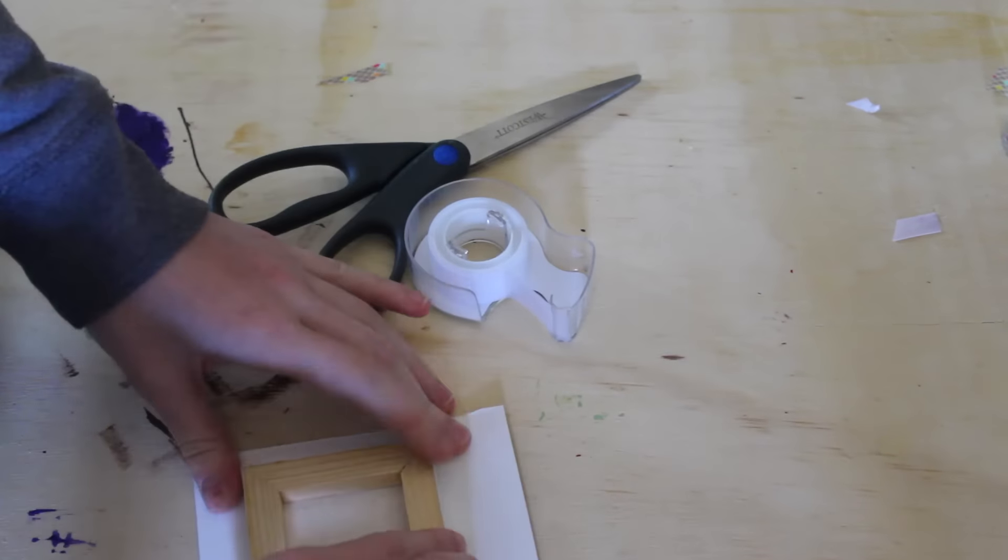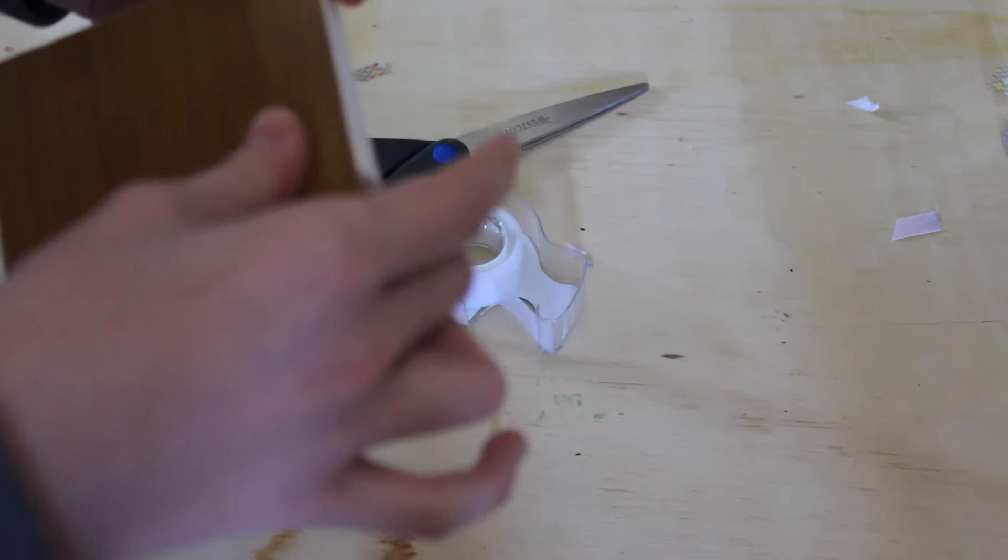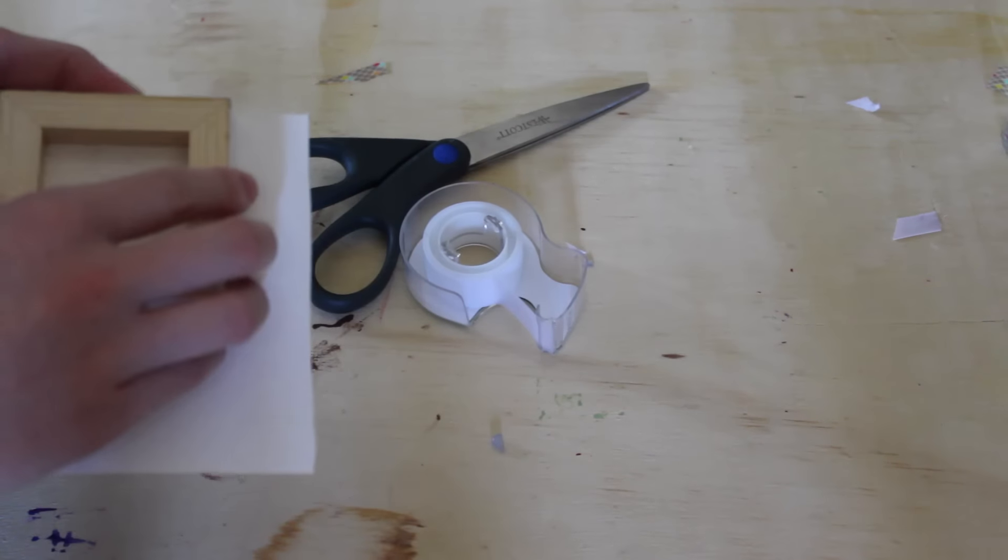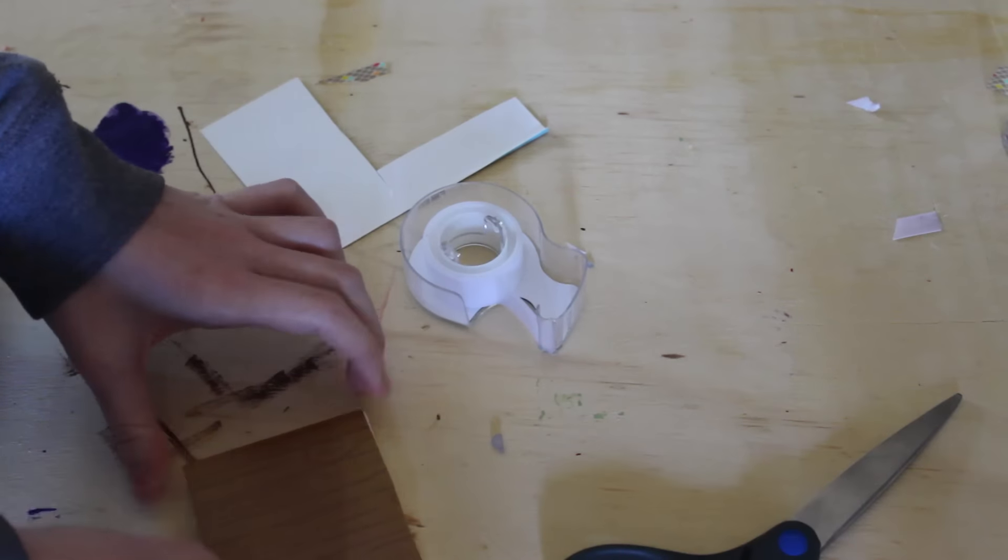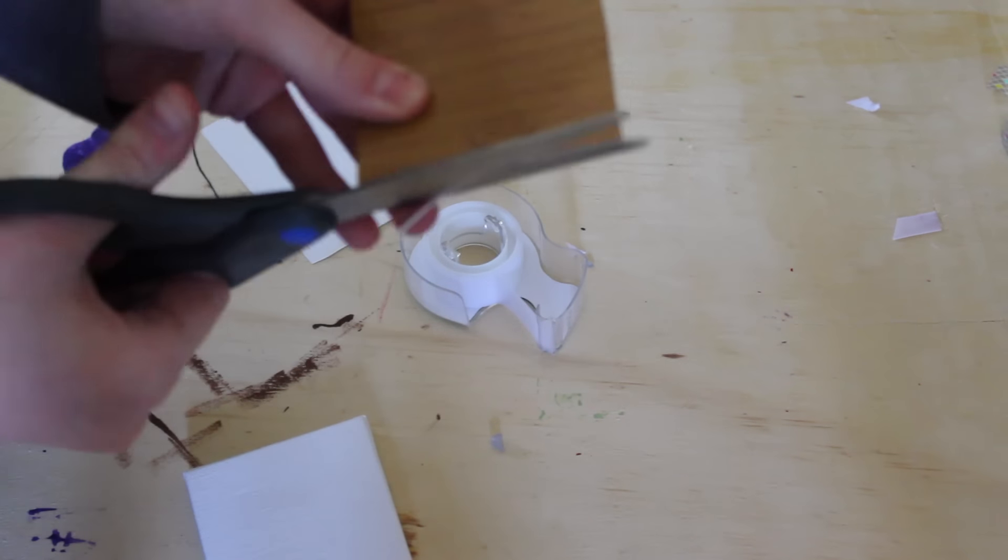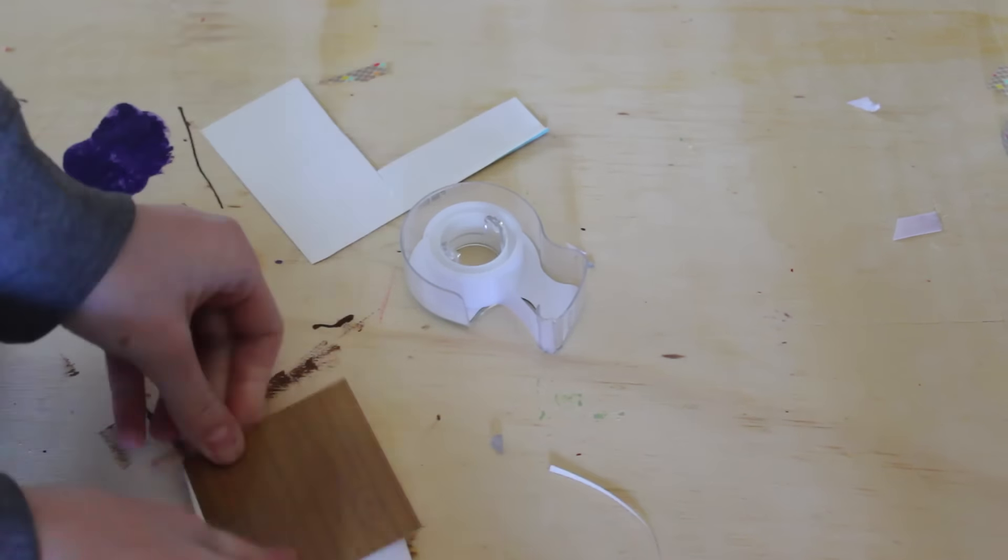For this you're going to need a canvas, a piece of scrapbooking paper, some tape and scissors. This one is pretty easy. All you're going to do is measure the paper to the size of your canvas and then tape it on. I use tape instead of glue because you can remove it easily so I can put a different piece of paper on it if I wanted to.